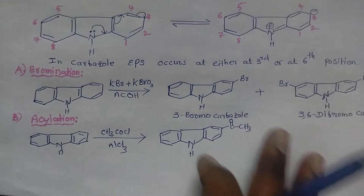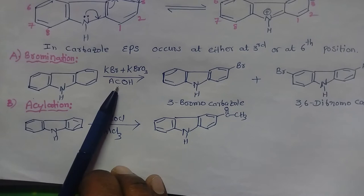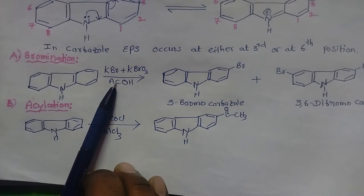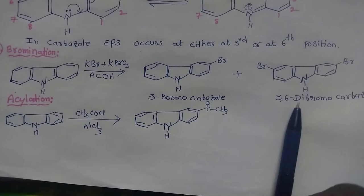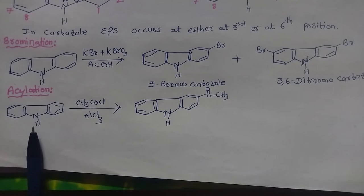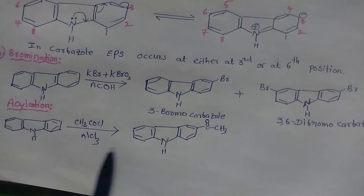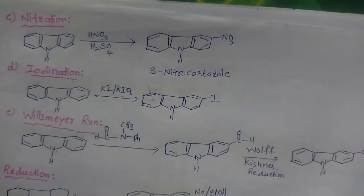For bromination, when carbazole is treated with potassium bromide and potassium bromate in the presence of acetic acid, we get two types of products: 3-bromo carbazole and 3,6-dibromo carbazole. For acylation, when carbazole is treated with acetyl chloride in the presence of AlCl3 (aluminum chloride), we get 3-acetyl carbazole — the acetyl group is substituted at the third position.